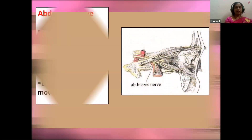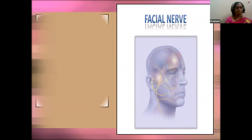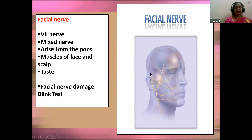The sixth cranial nerve is the abducens nerve — a motor nerve arising from the pons of the brain stem. It innervates the lateral rectus muscles. It controls the muscles of facial expression — anger, pain, fear, smile — and all facial expressions. It also innervates the muscles of the face and scalp. The seventh cranial nerve is the facial nerve — a mixed nerve arising from the pons — responsible for taste and different facial expressions. Any damage to the facial nerve leads to facial palsy, including an inability to blink.